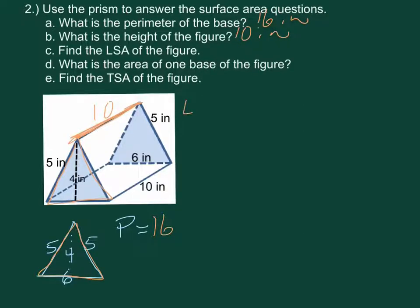Our lateral surface area is your perimeter times your height. So our perimeter was 16, our height was 10. So our lateral surface area is 160 square inches.